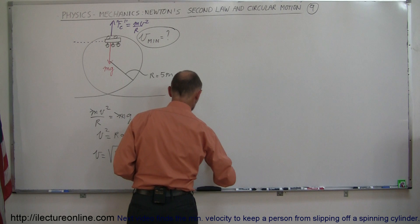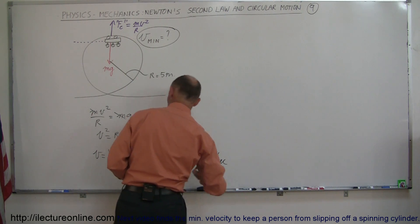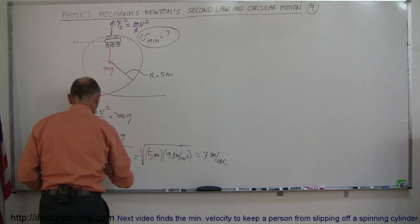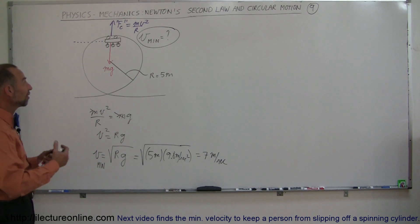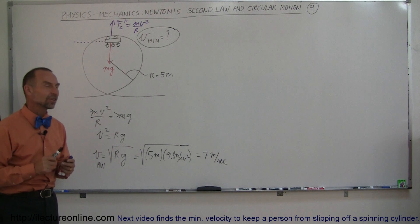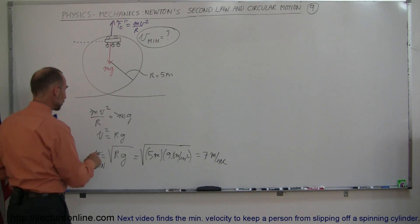And the square root of 49 is 7. So 7 meters per second is the minimum velocity that car has to have, or those people and the car will simply fall off the track. Now here's an interesting thing. Notice the equation.